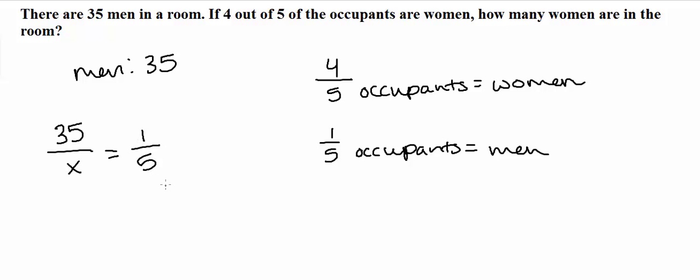So now going from there, we're going to solve for x. I'm just going to cross multiply here. So I'm going to do 35 times 5 is equal to x times 1. On the left hand side, I'm going to get 170 is equal to x.